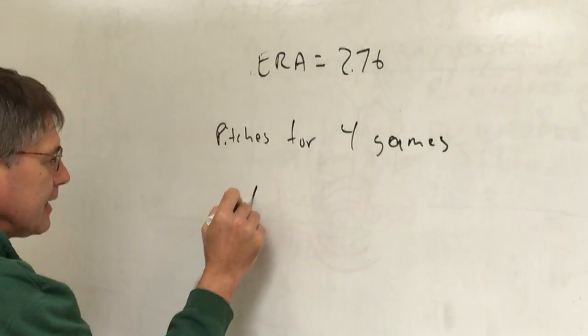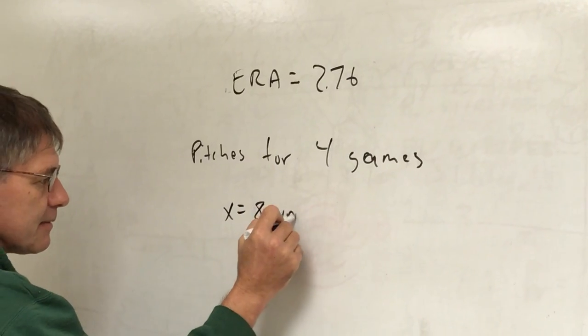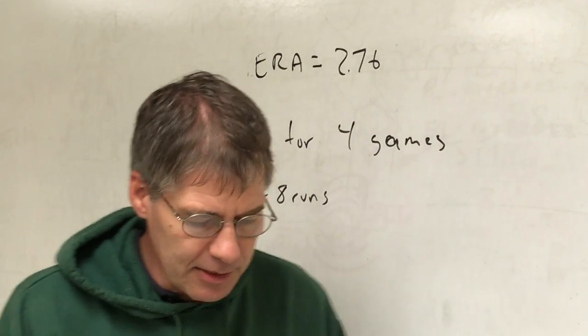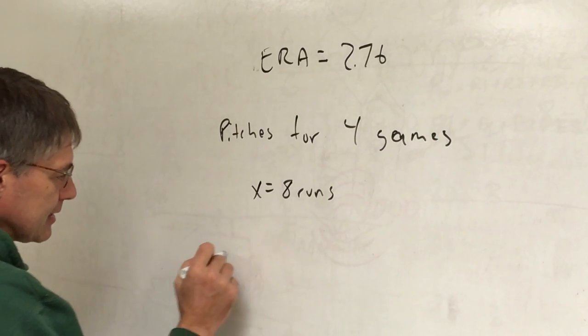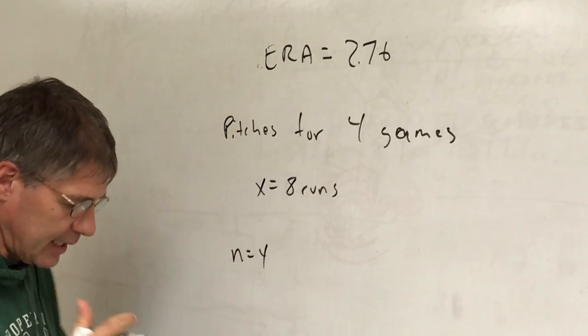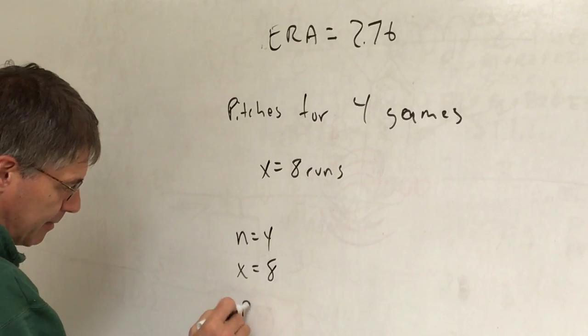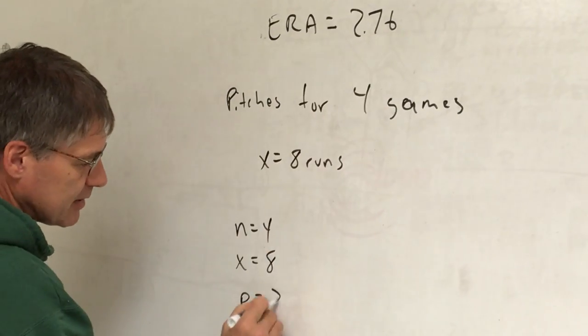Let's say he had 8 runs. Was this just random variation or did he have an exceptionally good one? So what I've got then is n is equal to 4, 4 games. My point of interest is 8. My earned run has been 2.76.